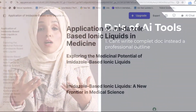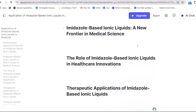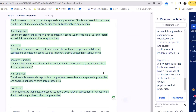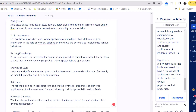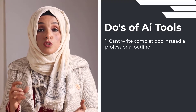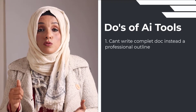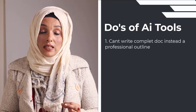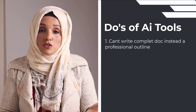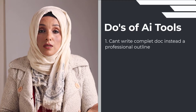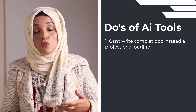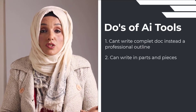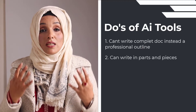However, you can develop a complete outline of your research document with the help of these AI tools. Jenni AI and PaperPal are prominent tools that will help you build the outline of any research document. You can also use ChatGPT, but it is better to go to specific tools designed for researchers with academia's needs in mind.